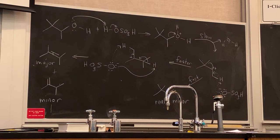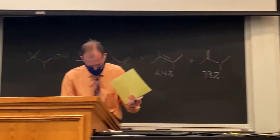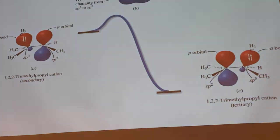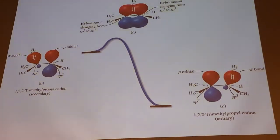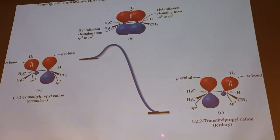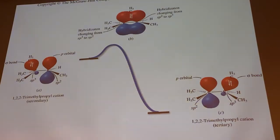We have an energy diagram here showing the rearrangement. The methyl group is migrating with both of the electrons in the sigma bond — that's why we draw the arrow from the sigma bond. At the transition state, this sigma bond is going to be overlapping with the adjacent p orbital as the shift is taking place, so the methyl group is going to be partially bonded to two carbons at the transition state.